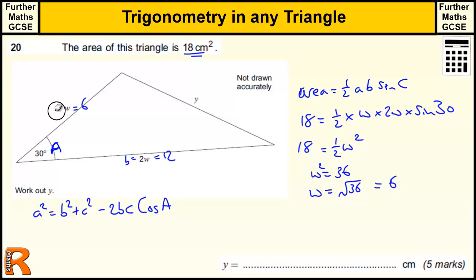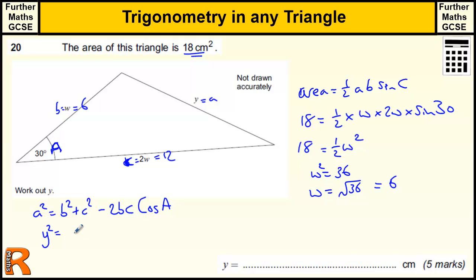If that is the angle A, the opposite side is little a, and the other two sides — let's make that one B and that one C. I always tend to make B the smaller of the two, though it doesn't actually matter which is which, only that little a is opposite the angle big A. So little a is Y, which is what we want. B squared is 6 squared, C squared is 12 squared, minus 2 times 6 times 12 times the cos of 30.